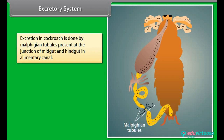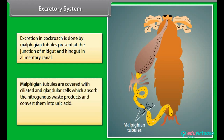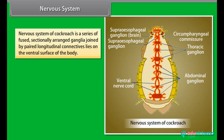Excretion in cockroach is done by malpighian tubules present at the junction of midgut and hindgut. Malpighian tubules are covered with ciliated and glandular cells which absorb nitrogenous waste products and convert them into uric acid. This type of excretory system is known as uricotelic.